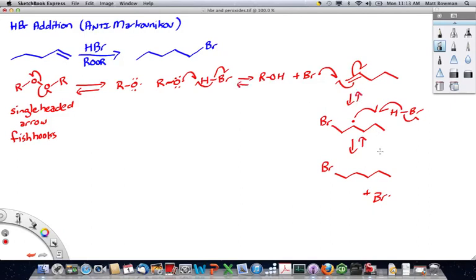But the end product that you get has the bromine on the less substituted carbon and the hydrogen on the more substituted carbon, hence it is anti-Markovnikov.